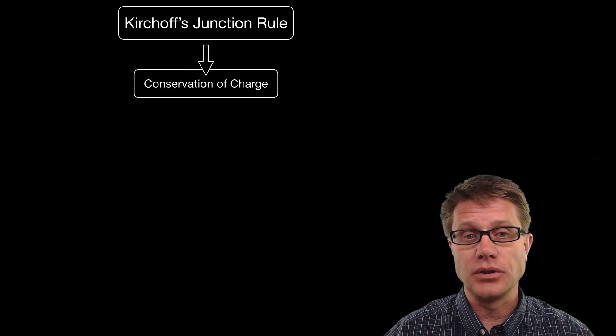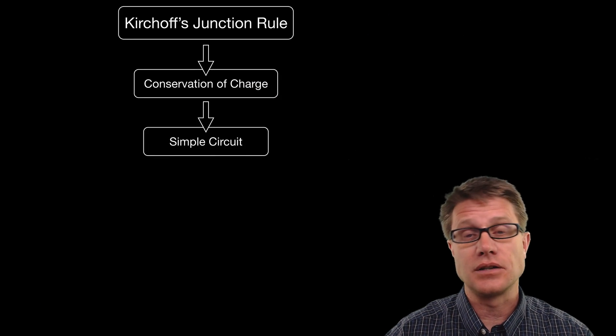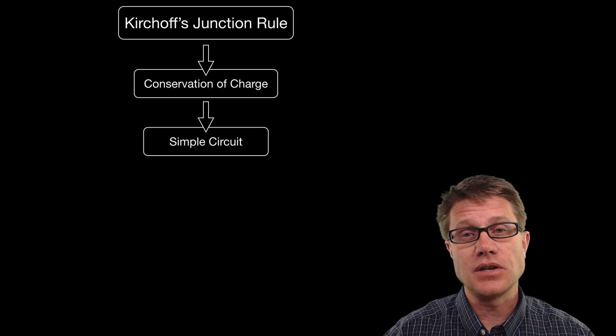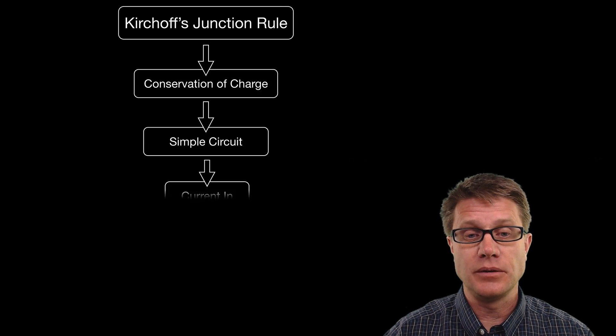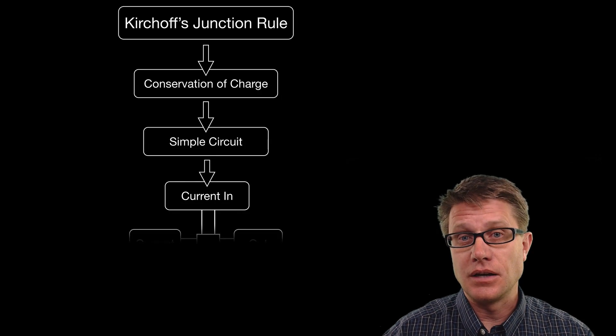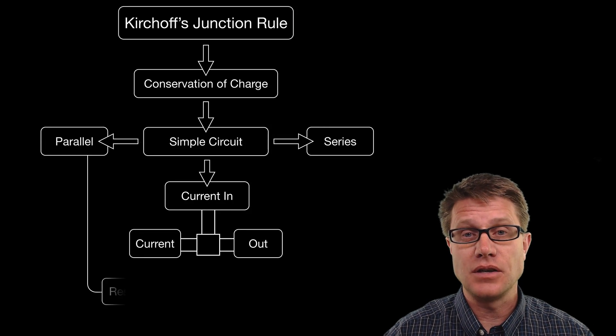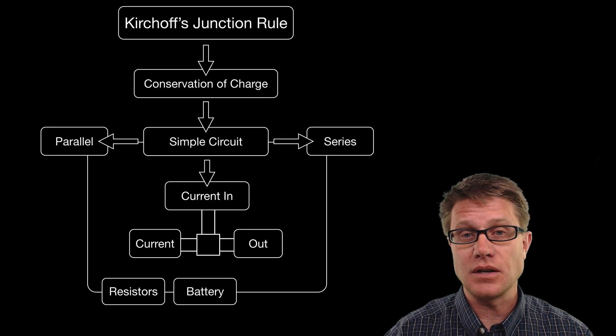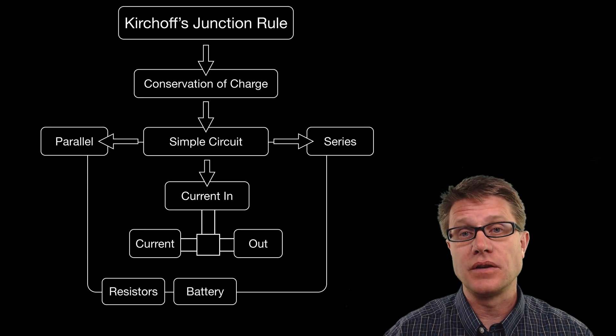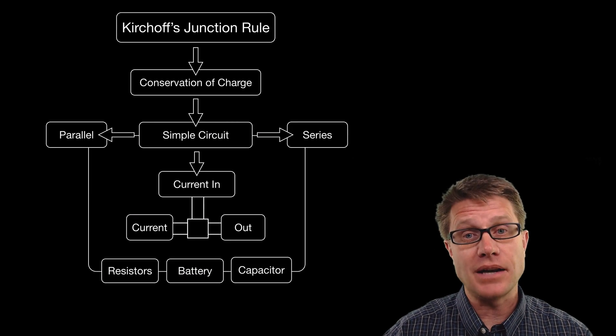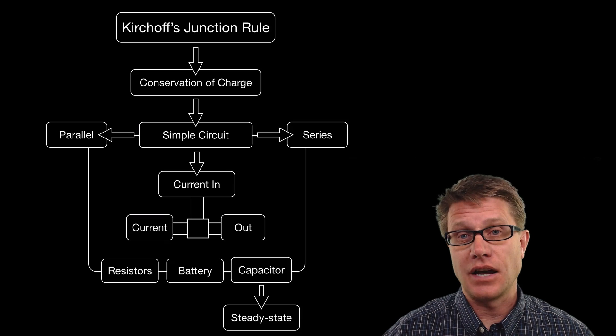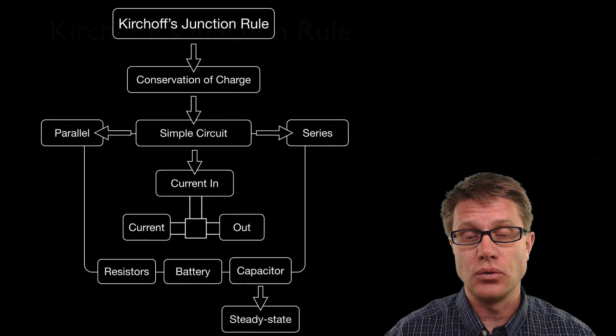And so Kirchhoff's junction rule is an application of the conservation of charge. And so in physics 1 you should be able to solve a simple circuit. And the current in has to equal the current out. So that would be a simple circuit in parallel or series that has a battery and some resistors. As you move into physics 2 you have to be able to add capacitors in steady state to that understanding of Kirchhoff's junction rule.